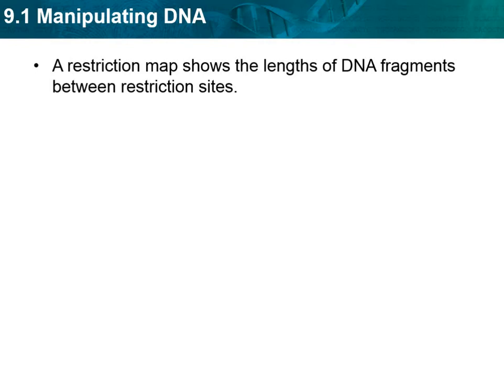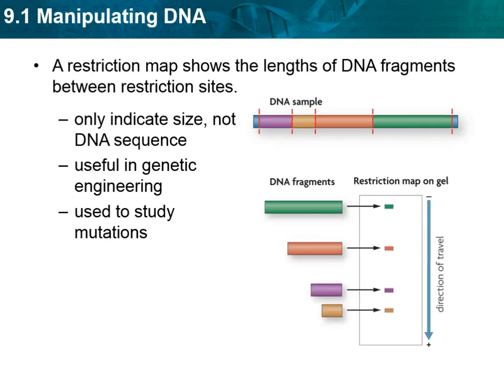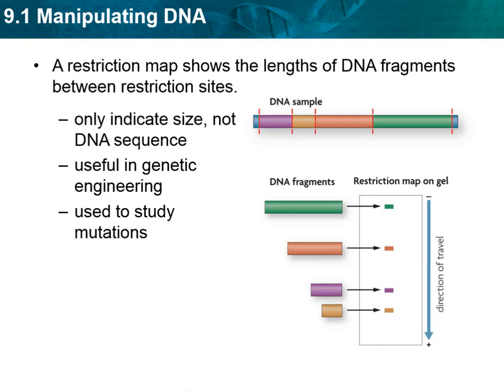A restriction map shows the length of the DNA fragments between restriction sites. It only indicates size, not DNA sequence, but it is useful in genetic engineering and used to study mutations — you can see all the different fragment lengths in that piece of DNA. That is the end of the notes for section one.